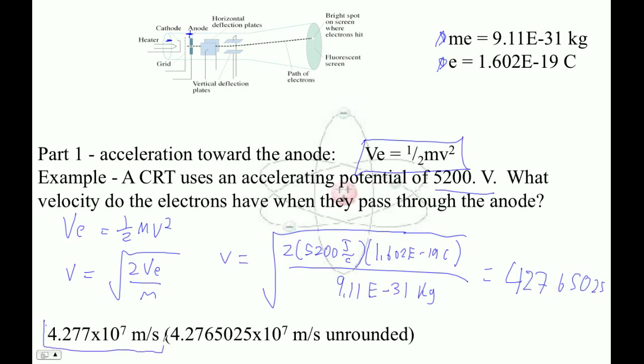4.2 times 10 to the 7 meters per second. Now, we'll need to use the unrounded value, so I'm storing that in my variable V. I'm going storage alpha V. So, that's part one.